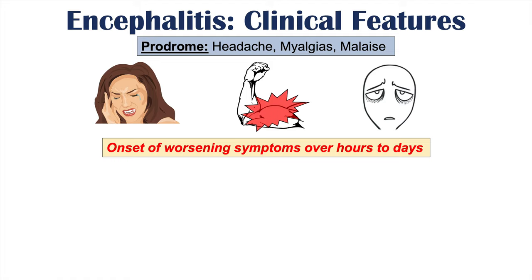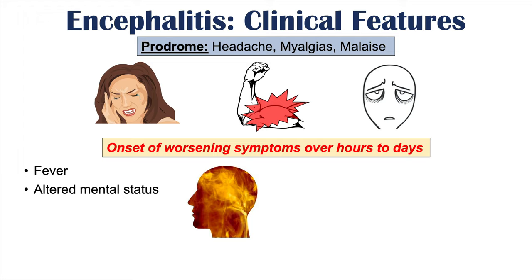After prodromal symptoms, patients undergo a worsening of symptoms over hours to days. This includes fever and altered mental status — a key feature of this condition. The altered mental status presents as confusion and altered sensorium; the patient often has a changing personality, and family members may describe the patient as being different than usual. Altered mental status along with fever and headache are key findings in encephalitis.